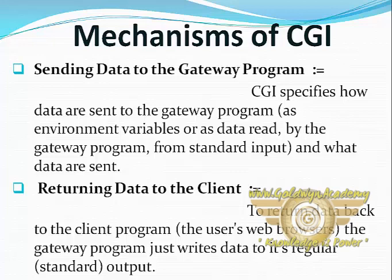This is known as sending data to the gateway program. The second mechanism is returning data to the client. To return data back to the client program — the user's web browser — the gateway program simply writes data to its regular or standard output. This is known as returning data to the client.